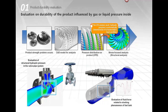CFD is useful to evaluate the durability of a product where gas or liquid is flowing inside — for example, to evaluate the strength of a blower, a valve, or an oil tank. This includes sloshing analysis to investigate the movement of liquid inside a tank.